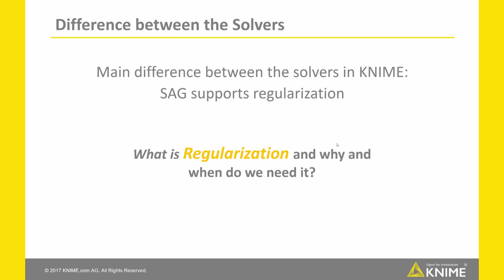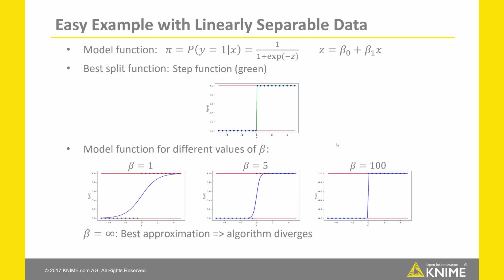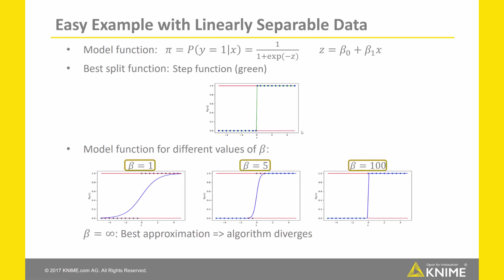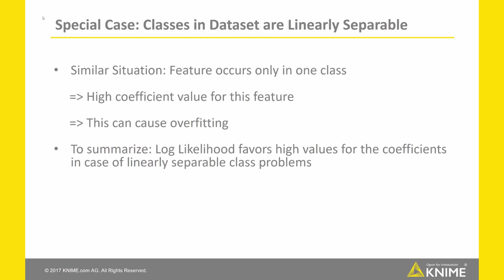One of the main differences between the algorithms is that the stochastic average gradient supports regularization. What is regularization, and why and when do we need it? We said that the optimization problem has a unique solution — but what happens if the data are linearly separable? With only one independent variable x, if x is negative the class is 0 and if x is positive the class is 1, the best-fitting function is a step function at x equal to 0. The higher the modulus of beta, the closer we approximate that step function, meaning we need the modulus of beta to be infinite — the algorithm diverges. Similarly, if a feature only occurs in one class, the algorithm assigns a very high coefficient to that feature, causing overfitting.